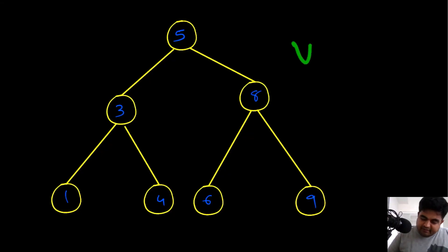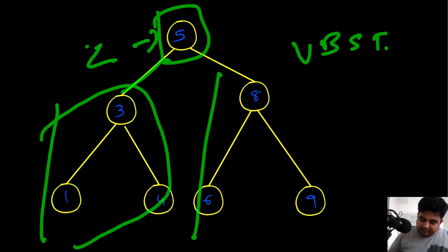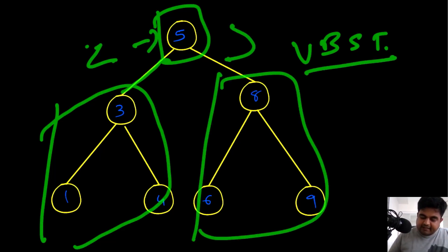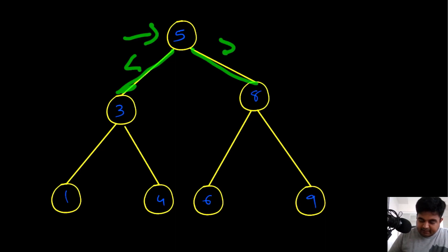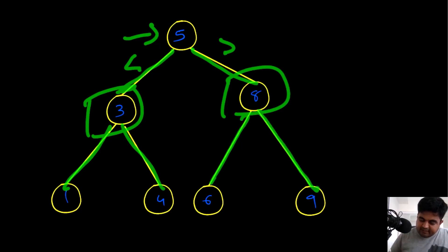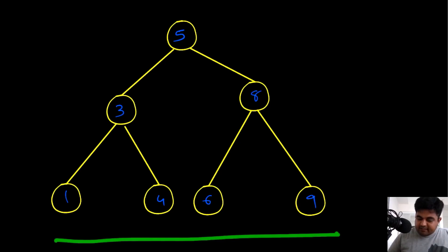Based on the definition, for any particular node, if its entire left subtree is less than that node and its entire right subtree is greater than that node, we define it as a valid binary search tree. The first intuition is that for any given node, we check its left child and right child — if the left child is less than it and the right child is greater than it, we keep repeating the same process for all subsequent children. If we reach the end of the tree, we return true.